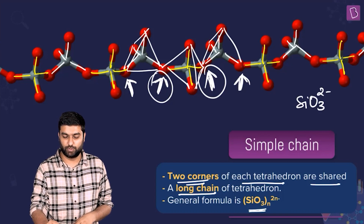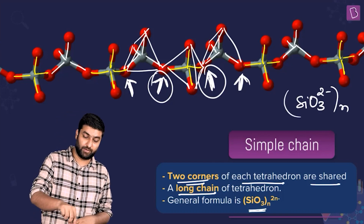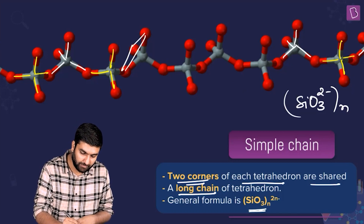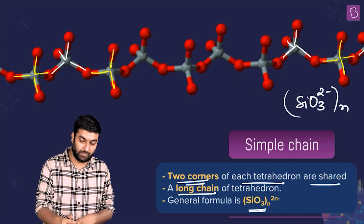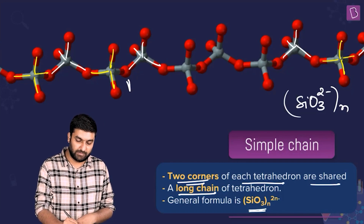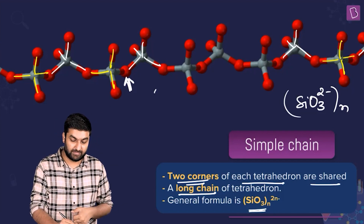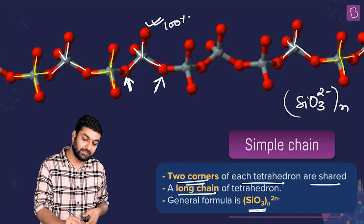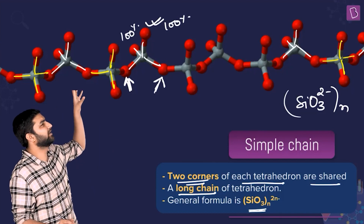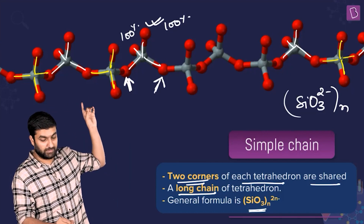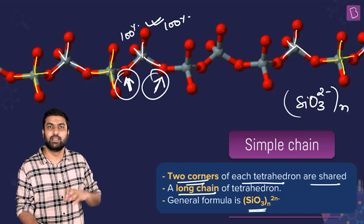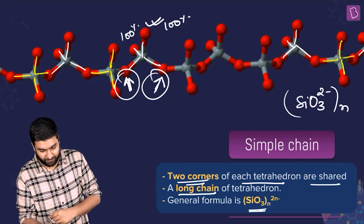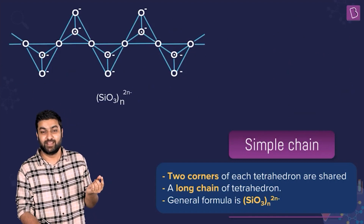Let's verify this in a simple manner. For any tetrahedron in the chain: this oxygen contribution is 50%, and this oxygen contribution is another 50%, while this one and this one are each 100%. So again, two oxygens with complete contribution and two oxygens at 50% each — that gives SiO₃ with a 2 minus charge, written as (SiO₃²⁻)ₙ.